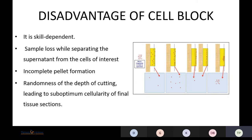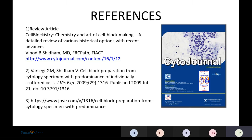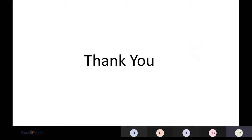Disadvantages of cell block: it is a skill-dependent technique. There can be sample loss while separating the supernatant from the cells of interest. There can be incomplete pellet formation, and there can be randomness in the depth of cutting, leading to suboptimal cellularity of final tissue sections.